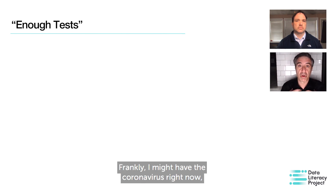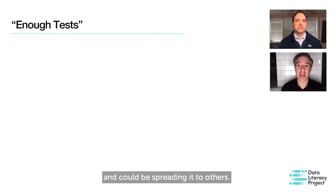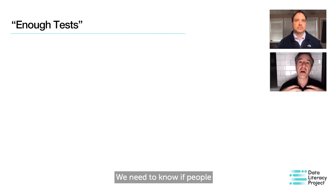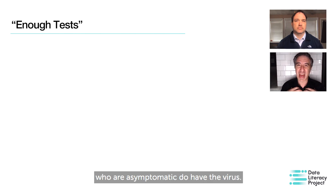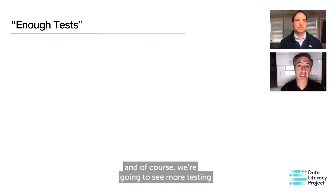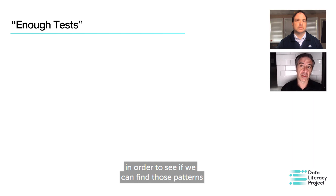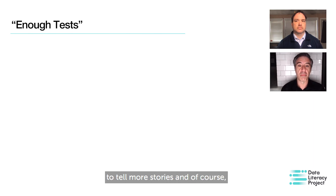Frankly, I might have the coronavirus right now and not know it — I'm just in the four-to-seven-day incubation period and could be spreading it to others. We need to know if people who are asymptomatic do have the virus. We're going to see more of that. And of course, we're going to see more testing for antibodies — for immunities — in order to see if we can find those patterns to tell more stories.